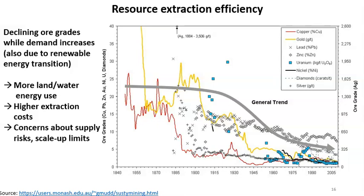Many of these materials are quite relevant for the energy transition. The ore grade declines because, as technology advances, we can mine deposits that were previously not economic — that is one main reason. Another reason is that many of the easy-to-mine deposits have already been depleted, so we have to move on to lower-grade resources. Because global demand for most materials is actually increasing, the resource extraction efficiency for most ores and minerals is going down, and this is a longer process over time.